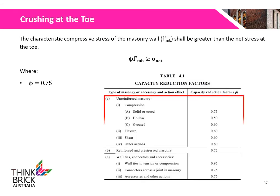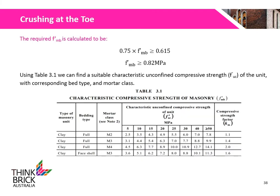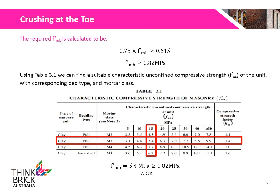The capacity reduction factor for unreinforced masonry in compression is 0.75, obtained from Table 4.1 of AS3700. The factored characteristic compressive stress of the masonry wall shall be greater than the net stress at the toe. The required characteristic compressive stress of masonry is at least 0.82 MPa. A 15 MPa clay unit using full bed M3 mortar has a characteristic compressive strength of 5.4 MPa, which is greater than the 0.82 MPa required and thus would be suitable.